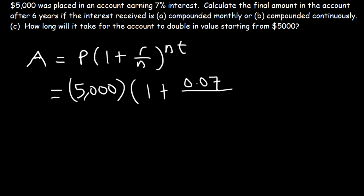Now, N is the number of times your account is credited with interest per year. So it's compounded monthly. That means your account is credited with interest every month or 12 times a year. So N is 12.